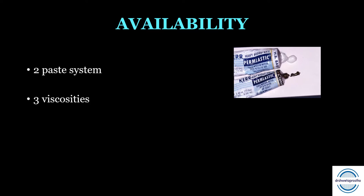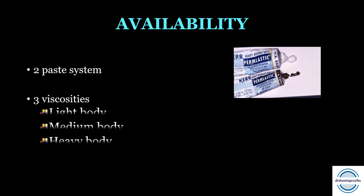Polysulfide impression materials are available as a two-paste system — a base paste and an accelerator or catalyst paste. They are available in three viscosities: light body, medium body, and heavy body.